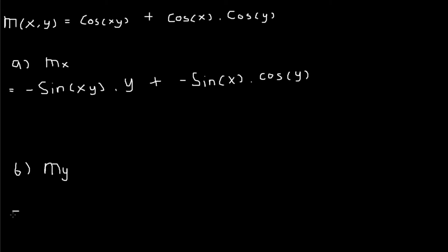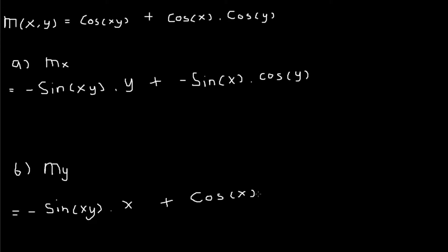Now we differentiate this equation in regards to y. We do the same thing: the differentiation of cos(xy) in regards to y is minus sin(xy) times the inner part differentiated in regards to y, which gives x. Then we write cos(x) as is, and the differentiation of cos(y) gives minus sin(y).